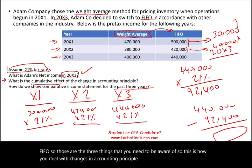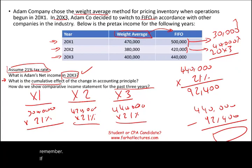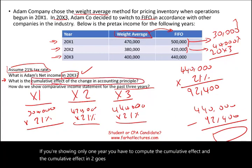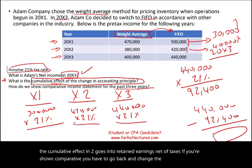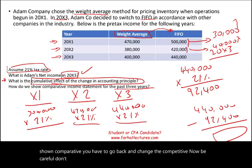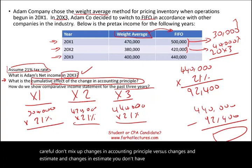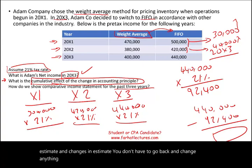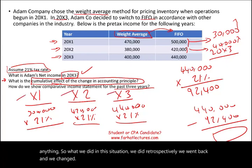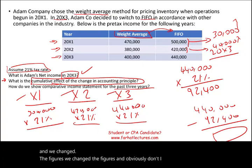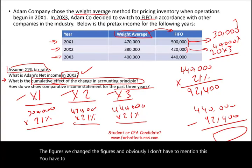This is a very important topic. If you're showing only one year, compute the cumulative effect and report it in retained earnings, net of taxes. If you're showing comparative statements, go back and restate the comparative figures — this is retrospective treatment. Be careful not to mix up changes in accounting principle with changes in estimate; for changes in estimate, you don't go back and change anything. You must also disclose changes in accounting principle in your notes.